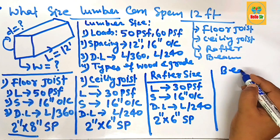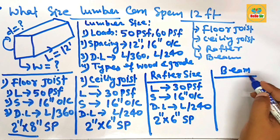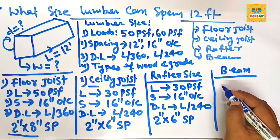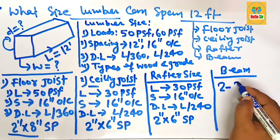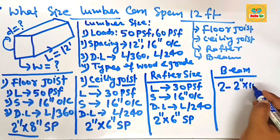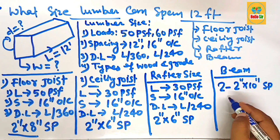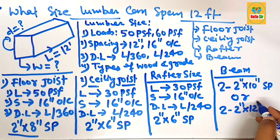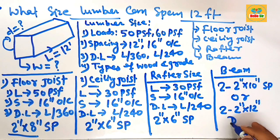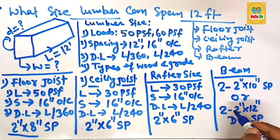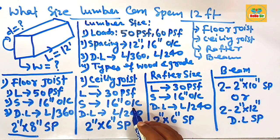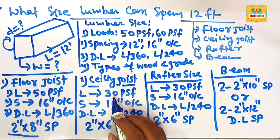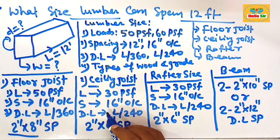For beam size required to span 12 feet: because it is a shorter span, you should either take two pieces of 2-inch by 10-inch southern pine dimensional lumber, or two pieces of 2-inch by 12-inch southern pine dimensional lumber as the beam required to span 12 feet. These are the different lumber sizes required as floor joist, ceiling joist, rafter, and beam for a 12-foot span.